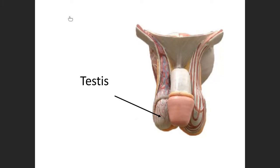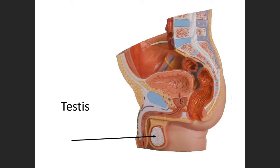Sometimes if the arrow is pointing to the structure on top, that is not the testi. This actual ball-like structure — that is the testi. The structure on top is something else which we'll see in a second.